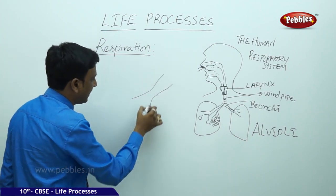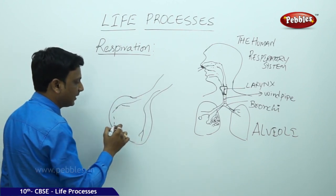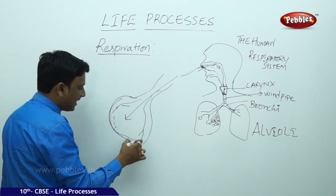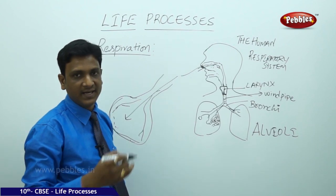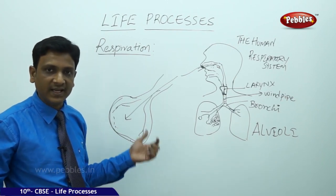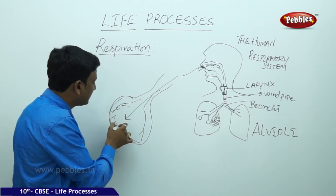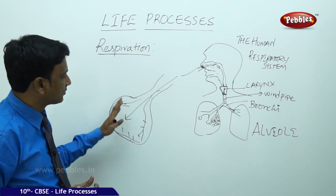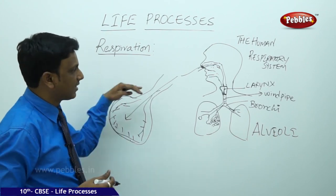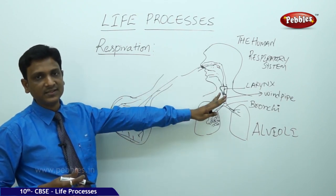Alveoli are the structural and functional units of the lungs. Each alveolus is richly supplied with blood vessels. When inhaled air containing oxygen enters the alveoli, diffusion of gases takes place between the blood and the alveoli. The alveoli are small folded bubbles that provide a large surface area in a small space, enabling maximum gas diffusion. This is how oxygen is diffused into the blood and carbon dioxide is released into the atmosphere.